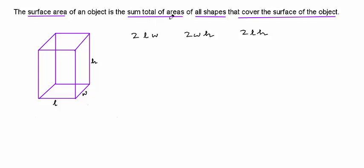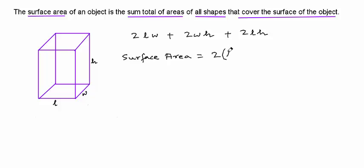Now if you add these up — the sum total of all the areas — and take 2 out as a common factor, we have the surface area is equal to 2 times (length times width + width times height + length times height).